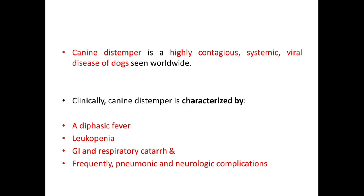Canine distemper is a highly contagious systemic viral disease of dogs seen worldwide. Clinically, canine distemper is characterized by a diphasic fever, leukopenia, GI and respiratory catarrh, and frequently pneumonic and neurologic complications as well.